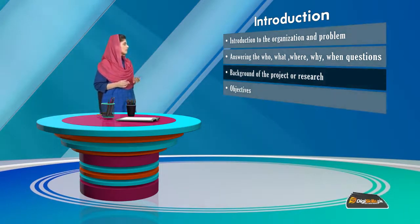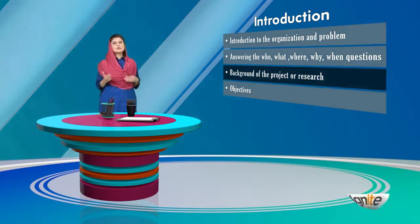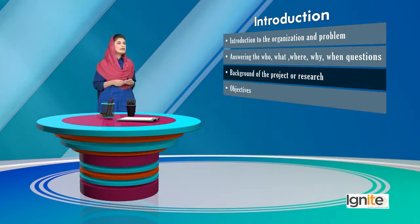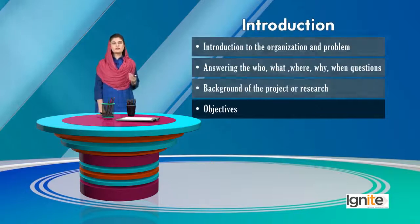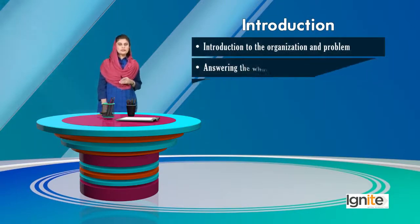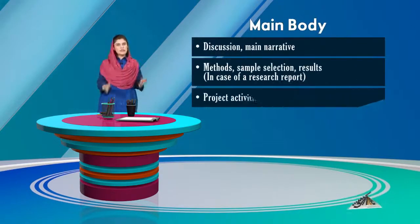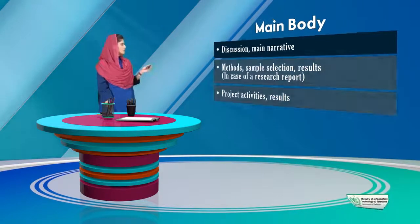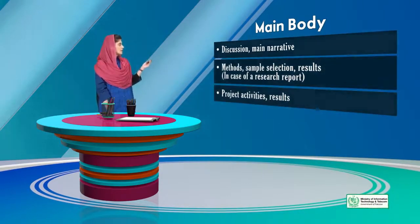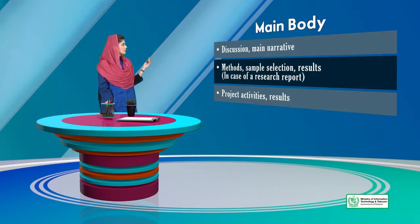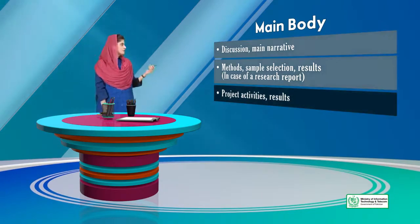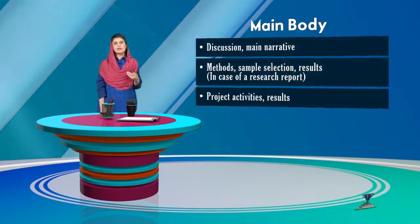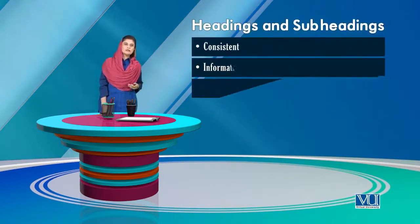The background of the project, research, or activity will also be described. There will also be a separate subheading for objectives — what were the objectives of all this activity. Then comes the main narrative of the report, which will include discussion of methods, sample selection if it's a research report, or what activities took place if it's a project report, along with their results, responses, and feedback.